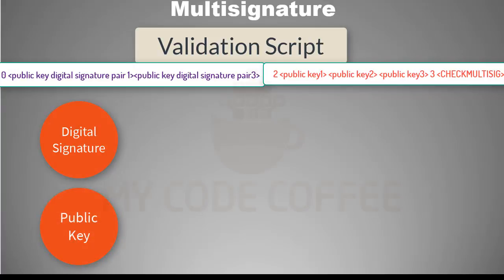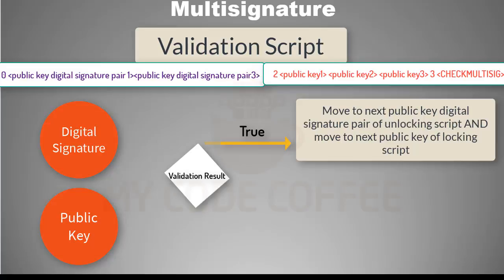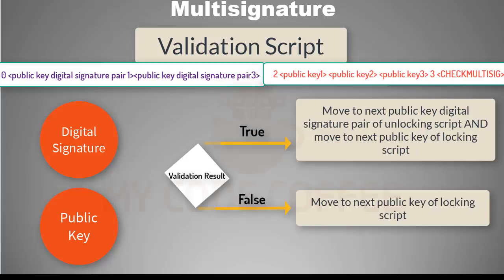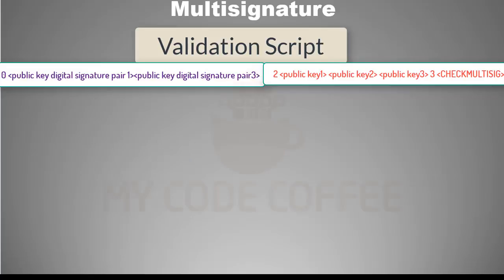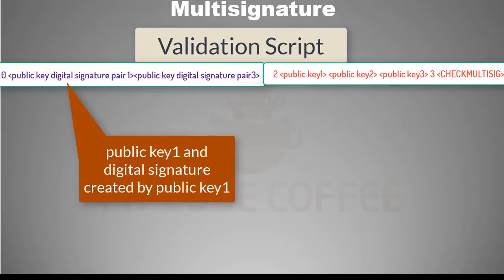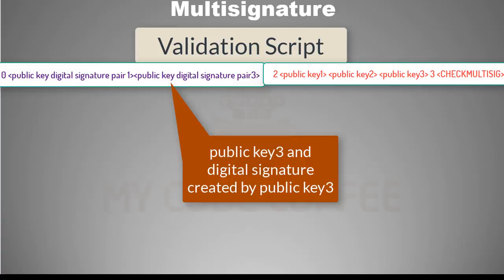After this, CHECK_MULTISIG enters a loop. It takes the first signature and public key, and calls the same function that CHECKSIG uses to check the signature. If validation succeeds, it increments both the signature counter and the public key counter. If it fails for that public key, it increases only the public key counter and tries to validate the digital signature with the next public key using the CHECKSIG function. If the signature fails for all public keys, CHECK_MULTISIG returns false, indicating that the validation script failed.